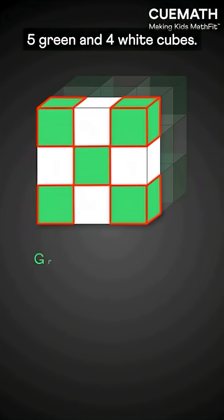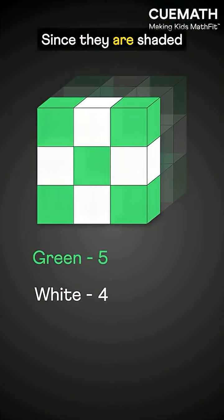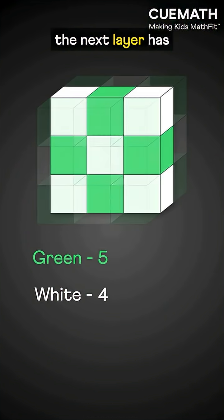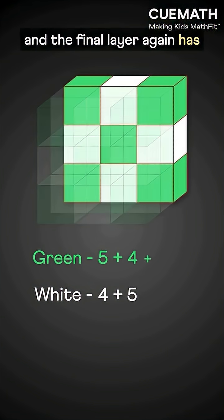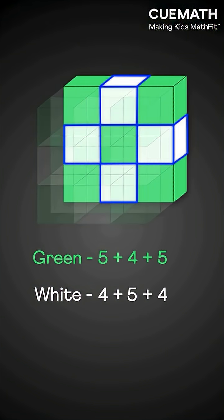The first layer has five green and four white cubes. Since they are shaded alternately, the next layer has five white and four green cubes. And the final layer again has five green and four white cubes. In total,